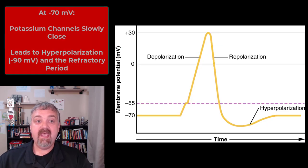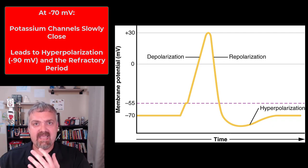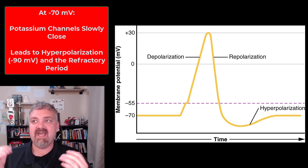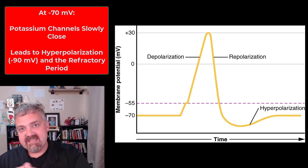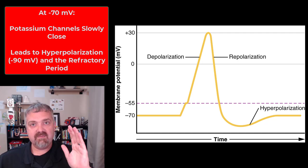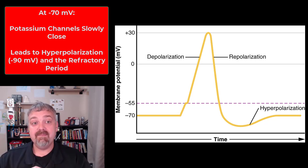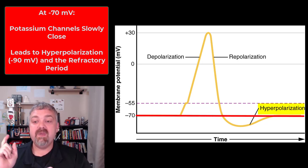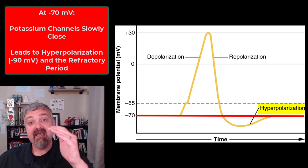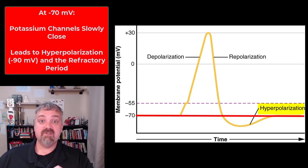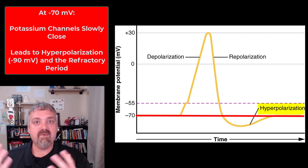But a really important thing happens here. At negative 70 millivolts, the potassium channels start to close, but they close really slowly — there is a delay. Think of movies where they are closing the castle gate and the last farmer sneaks in at the end. Whereas the sodium channels slammed closed, as the potassium channels slowly close, more potassium exits the cell than needed. That is why we do not just repolarize this nerve — we hyperpolarize it. The charge goes from positive 30 all the way down to negative 90 millivolts. We have hyperpolarized the nerve, and this leads to what we call the refractory period.